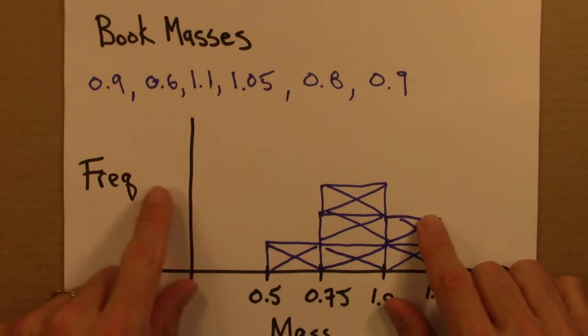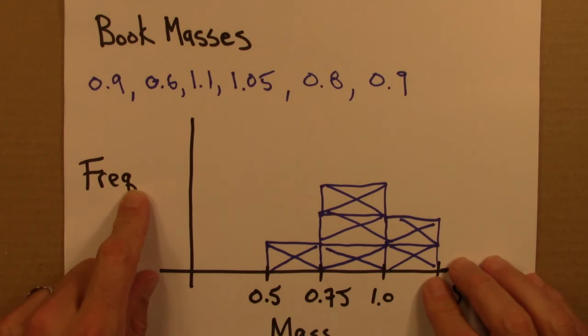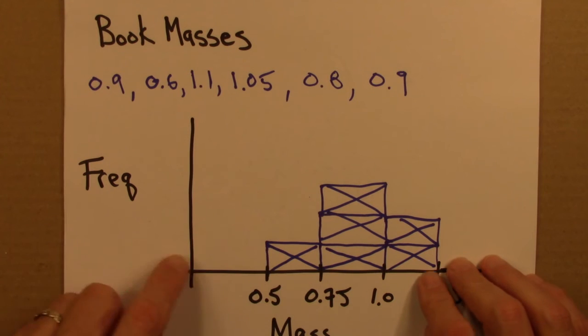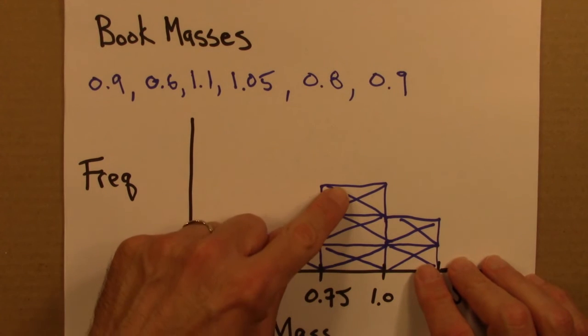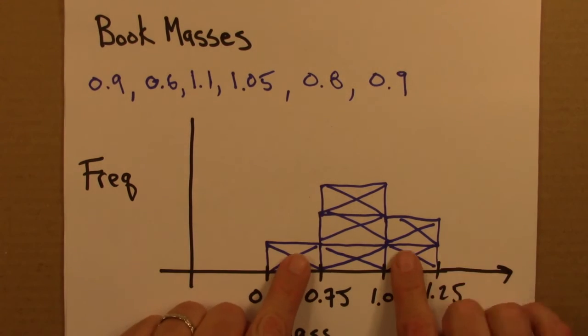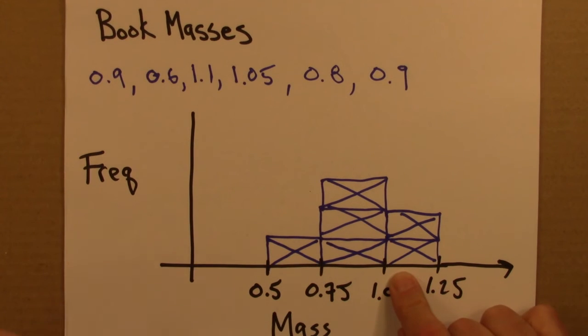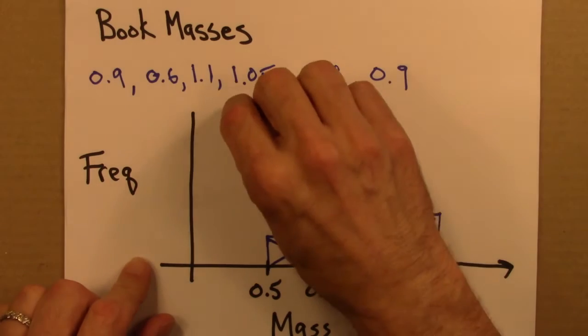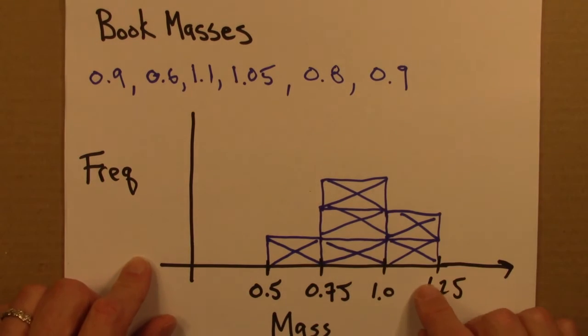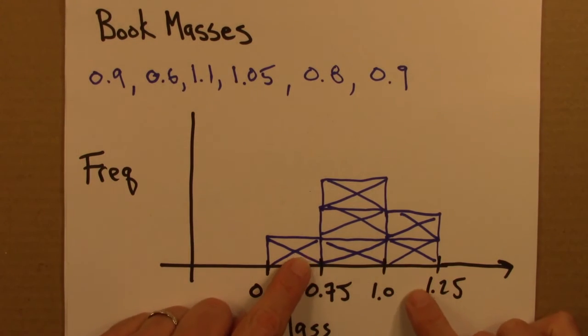And we can also think about this in terms of probability if I wanted. The higher this bar is here, the more probable it is that I were to observe a mass in this range. And in this particular case, this says if I were to choose one of these books at random, there's a 50% chance that it would be between 0.75 and 1.0.